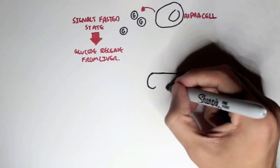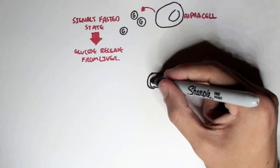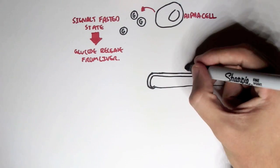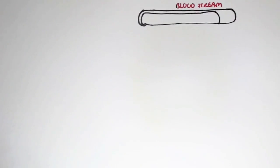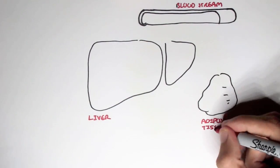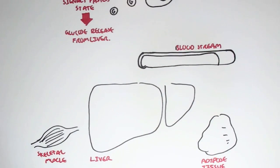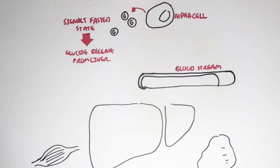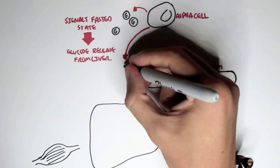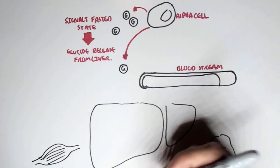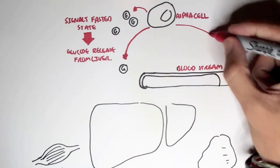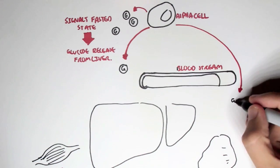Here we have the bloodstream with hypoglycemia — very low blood glucose. And here we have the liver, adipose tissue, and also skeletal muscle. We're in a fasted state with low blood glucose levels, as in hypoglycemia. This will cause the alpha cells to secrete glucagon.